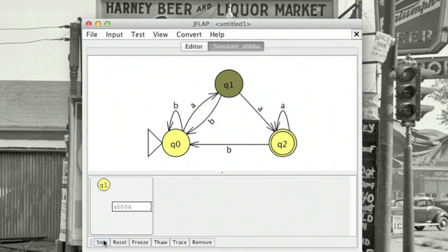One A takes me halfway to the suffix, but it's not quite there, so when I run out of input, this string is rejected.